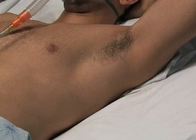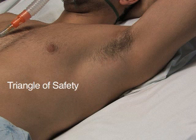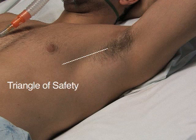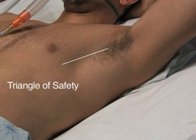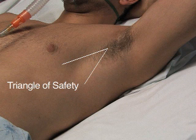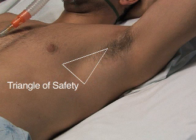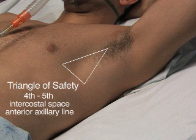The ideal location for placement of a chest tube is in the triangle of safety, defined by the lateral border of the pectoralis major muscle anteriorly, the mid-axillary line posteriorly (also the anterior aspect of the latissimus dorsi), the apex just below the axilla, and the horizontal level of the nipple inferiorly. The nipple line may be unreliable in female patients due to breast tissue. The triangle of safety should approximately lie between the fourth and fifth intercostal space in the anterior axillary line.